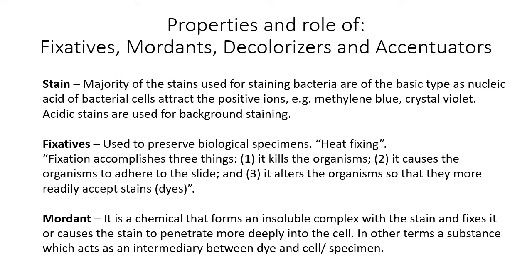Now about the properties and roles of fixatives, mordants, decolorizers, and accentuators. The majority of stains used for staining bacteria are of the basic type, because the nucleic acids of the bacterial cell attract positive ions. So mostly we use methylene blue, crystal violet, and similar stains. Acidic stains, being negatively charged, are used for background staining, since repulsion occurs as the bacterial cell wall is also negatively charged.